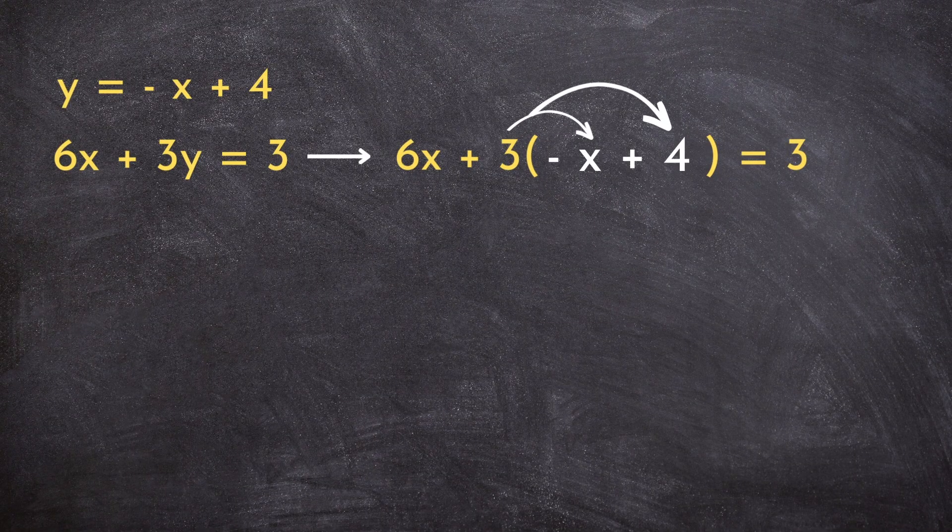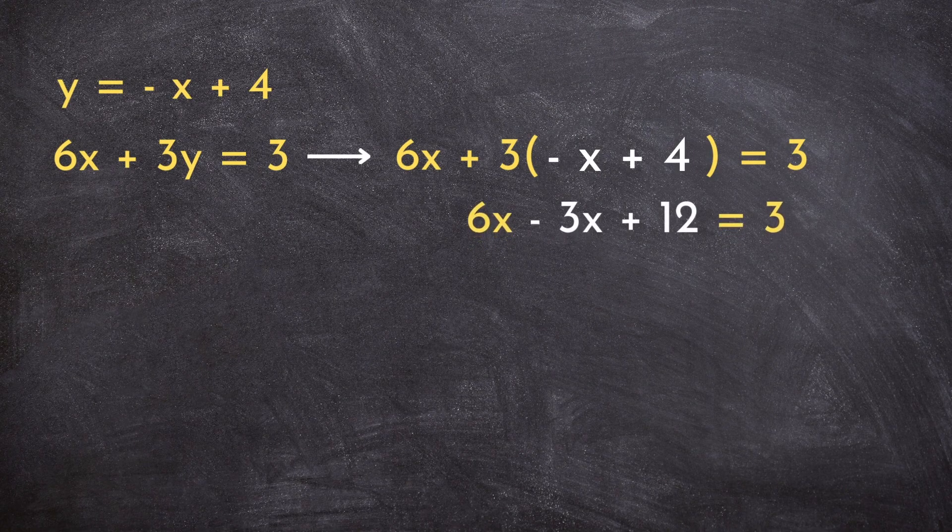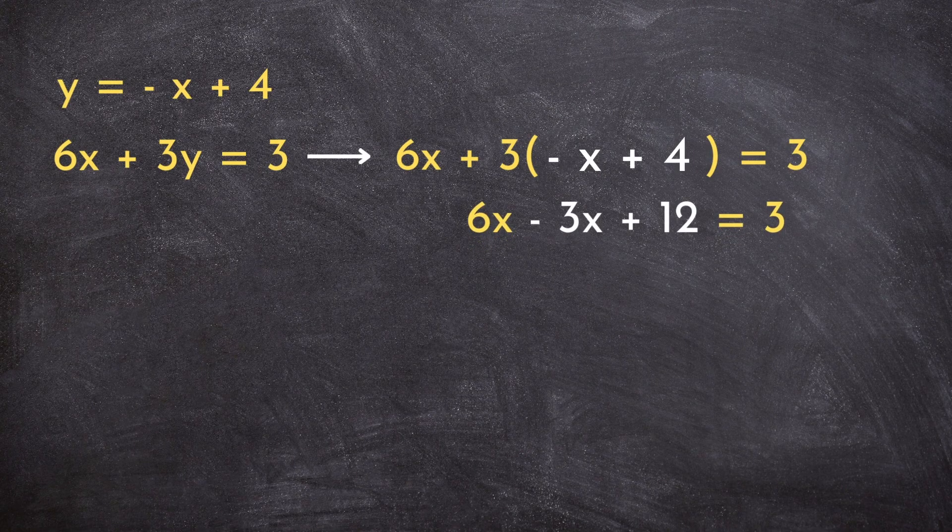Now this is all starting to look pretty messy, so let's clean some things up. We're going to distribute the 3 into the brackets so that we can start simplifying. Multiplying 3 by both negative x and 4 will result in 6x minus 3x plus 12 equals 3.